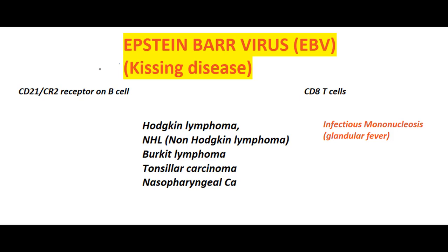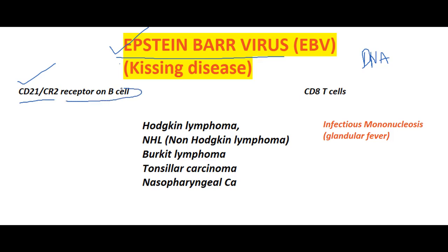Today I am going to discuss a little bit about Epstein-Barr virus. EBV is a DNA virus. When this virus enters our body, it acts on the CD21 and CR2 receptor on B cells, hence B cells get destroyed. This results in an increase in the formation of atypical CD8 T cells — atypical CD8 T cell count will be increased in Epstein-Barr virus.